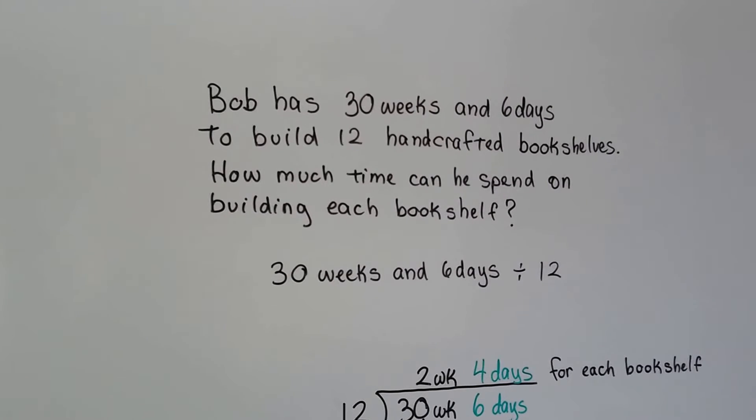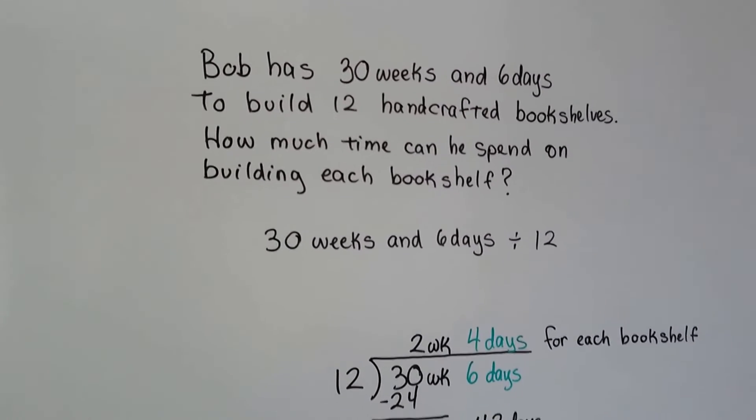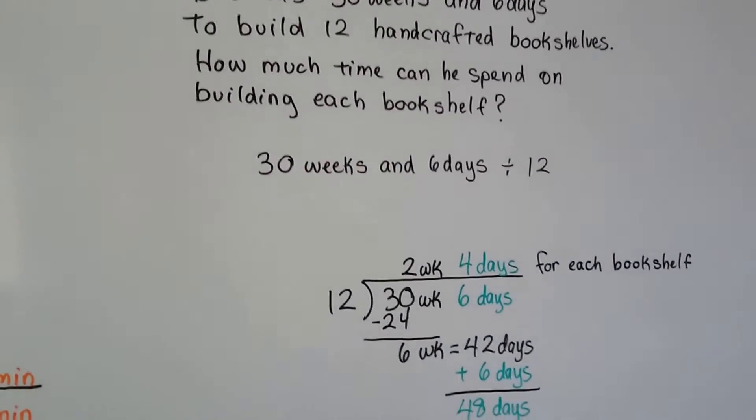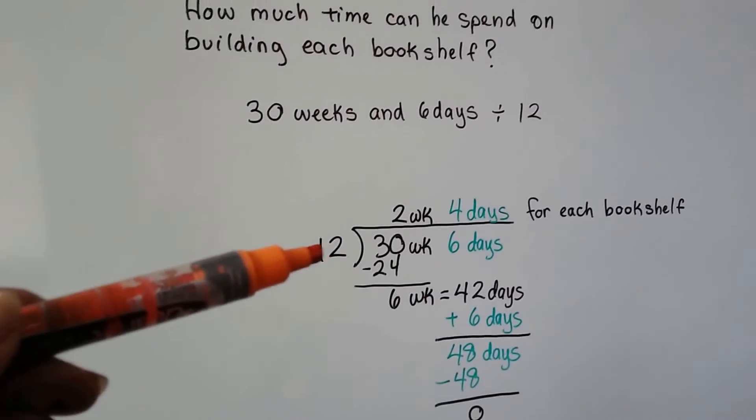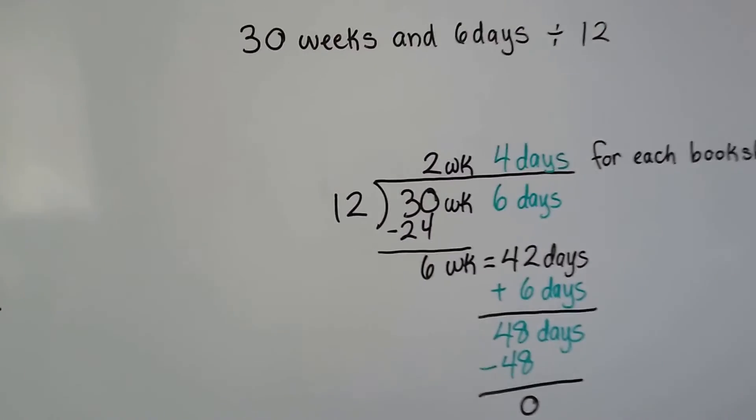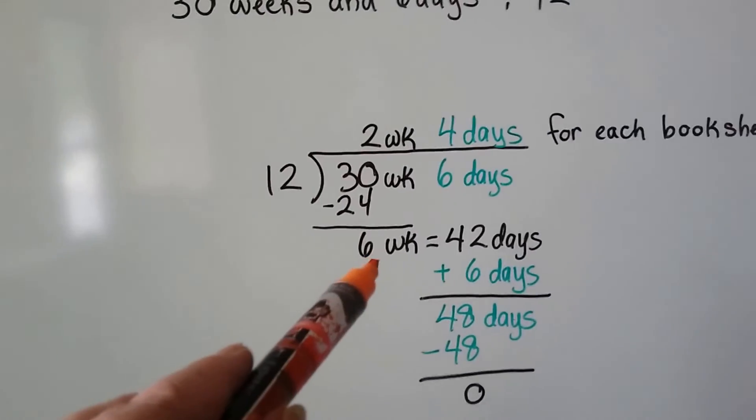Well, we need to divide 30 weeks and 6 days by 12. We need to see how many times the 12 will fit into that. So 12 goes into 30 two times. 12 times 2 is 24. That's going to leave 6 weeks.